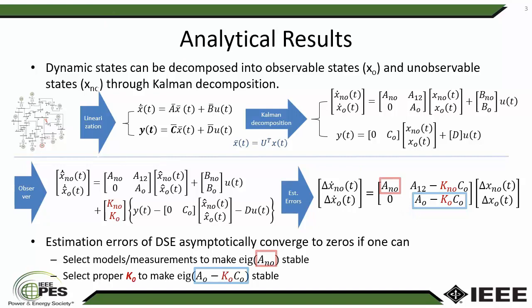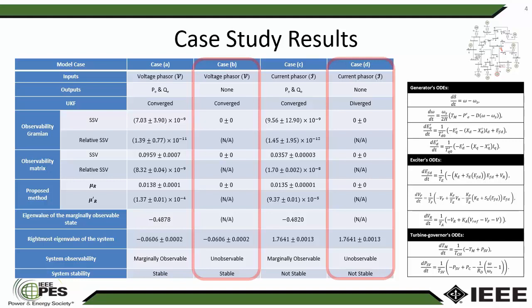Based on the detectability analysis guideline, we carried out a case study to verify our observation, focusing on Case B and Case D. Case B has an unobservable system setup with voltage phasor as the measurement and no output, yet DSE based on UKF converged. We checked the rightmost eigenvalue, which is a negative value — a stable system — so the state estimation results converge.